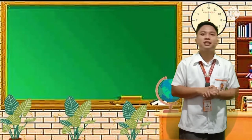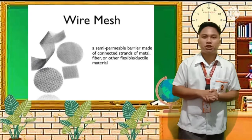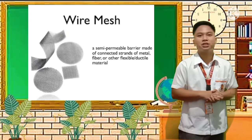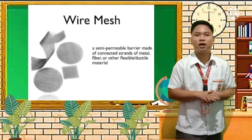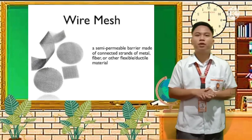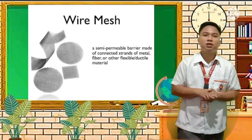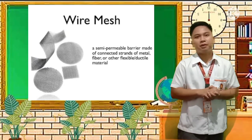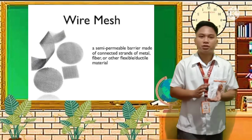Next we have wire mesh. It is a semi-formable barrier made of connected strands of metal, fiber, or other flexible ductile material. It is used as a barrier — something like a covering or screen made of connected metal strands.